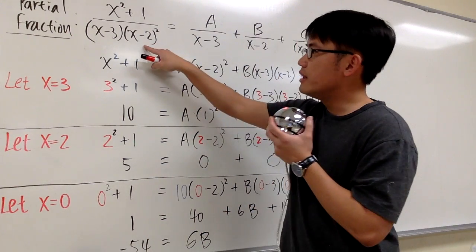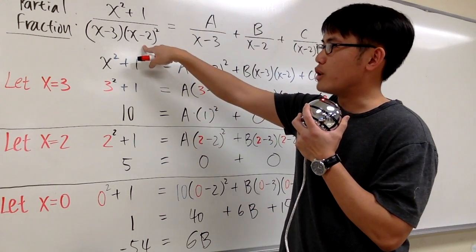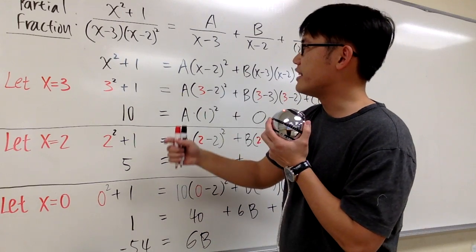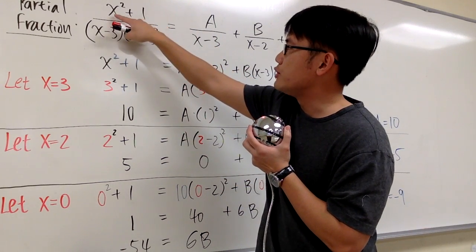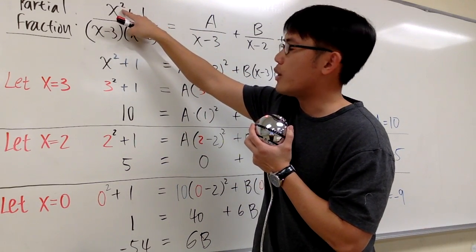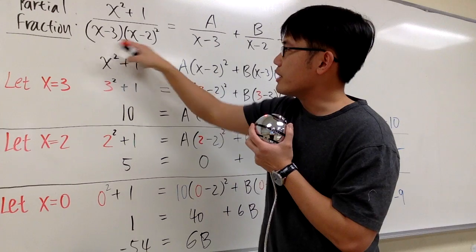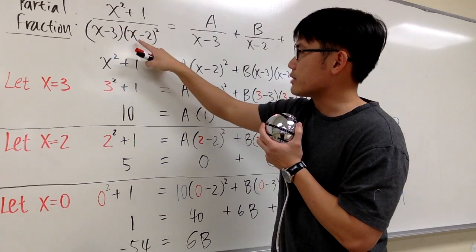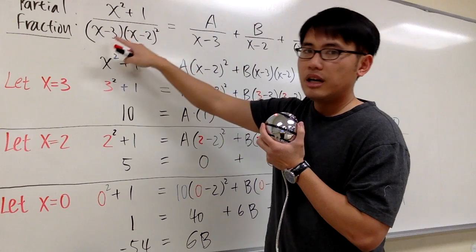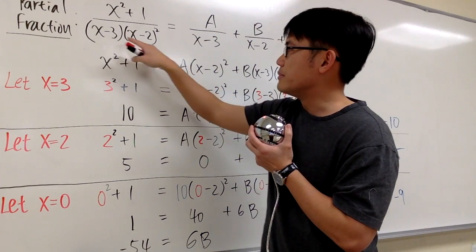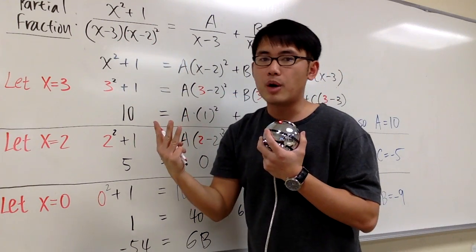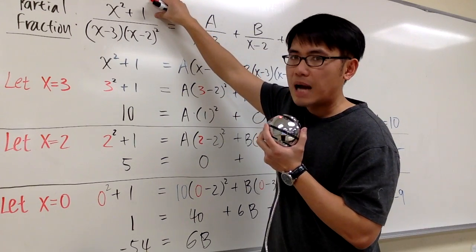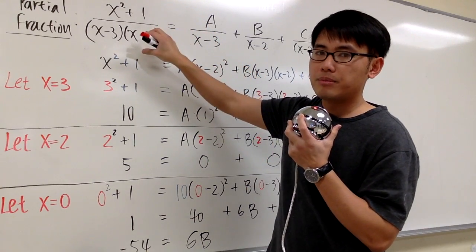Let's talk about how we can break down this big rational expression into a couple smaller ones. We have to check the degree first. The degree on the top is just x to the second power, which is 2. The degree on the denominator is going to be 3, because here I have x to the first, and then if you multiply this out, you get x to the second, and then x times x squared is x to the third power. This method only works if the degree on the top is less than the degree on the bottom.